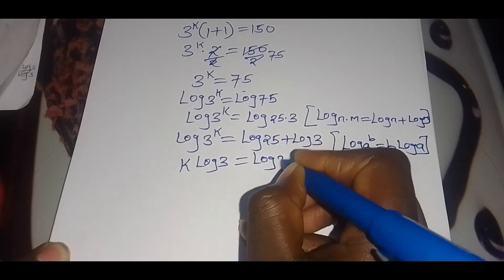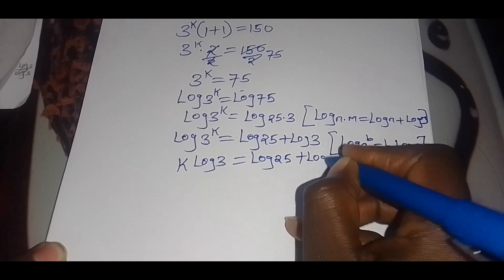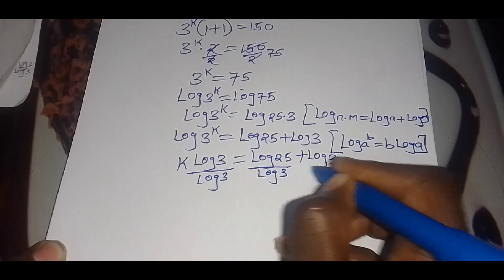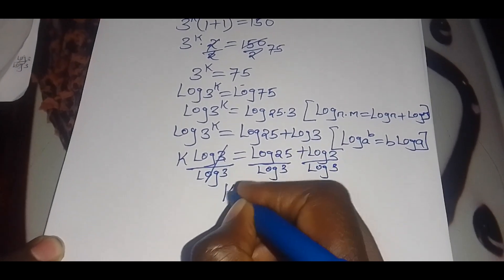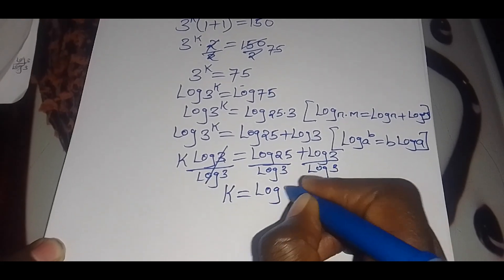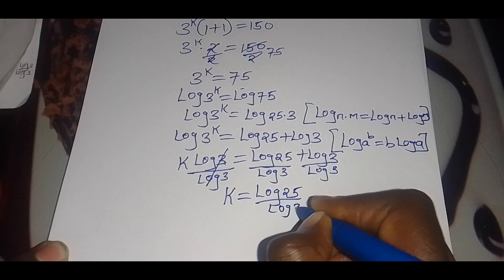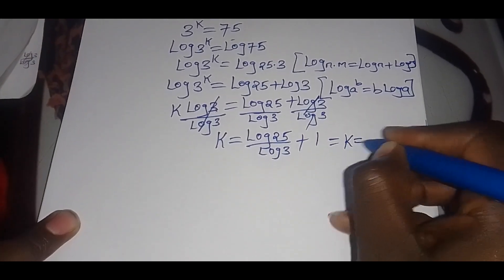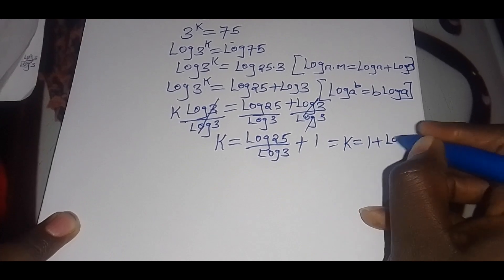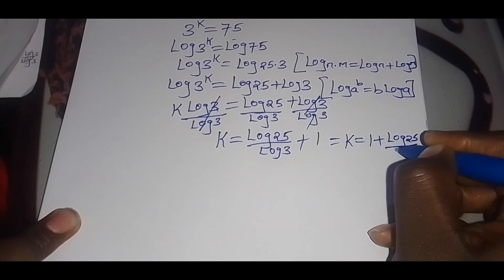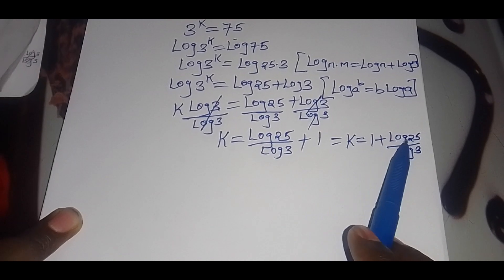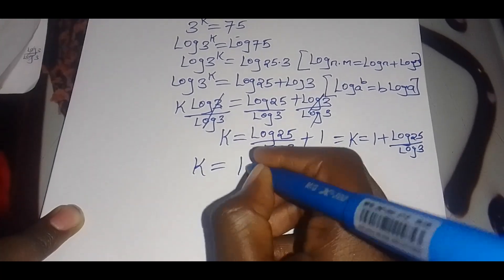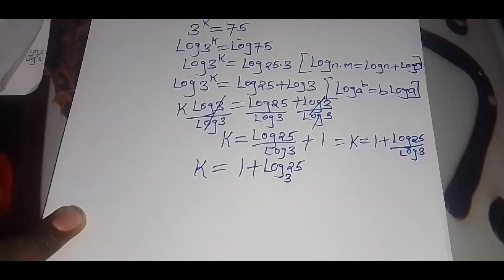We divide both sides by log(3), so that k equals log(25) divided by log(3), plus 1. So k equals 1 plus log(25) divided by log(3). Now, log(25) over log(3) can be expressed using the change of base identity as log base 3 of 25.